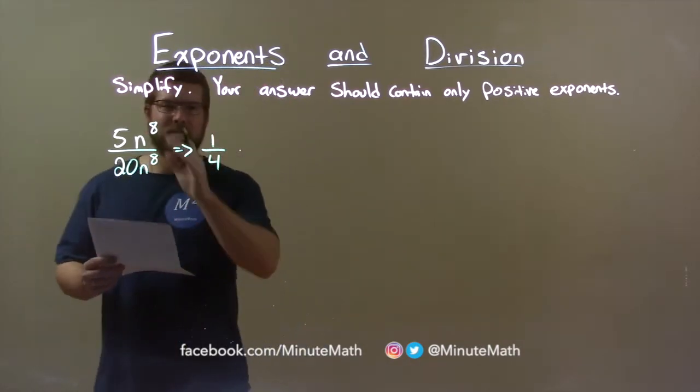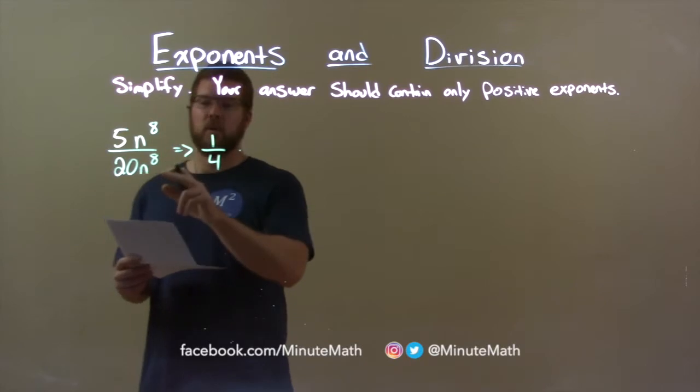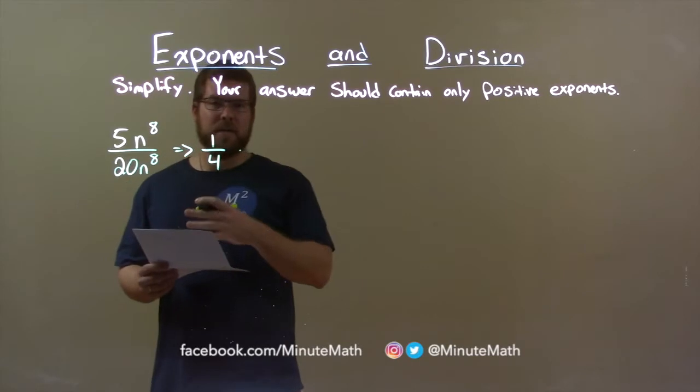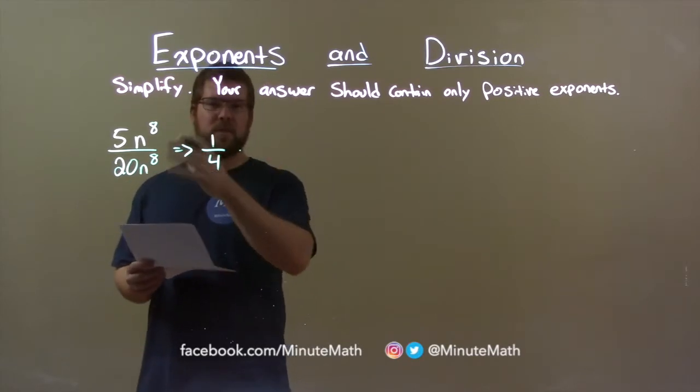Now, let's look at the variables. We have n to the 8th over n to the 8th power. We know that every number divided by itself is going to be 1. We'll see how this works.